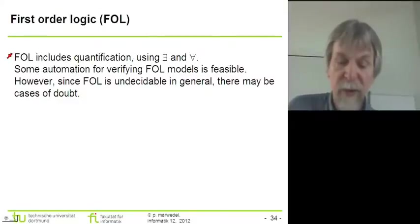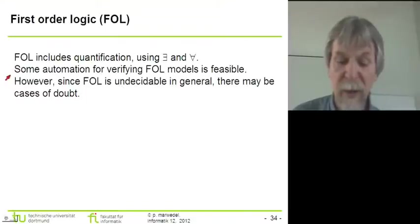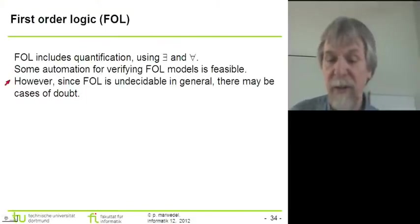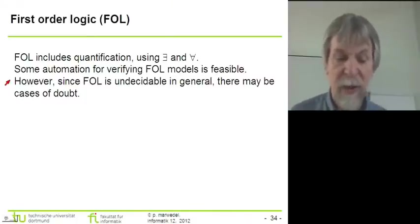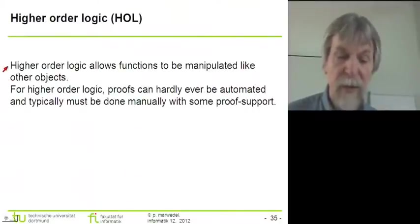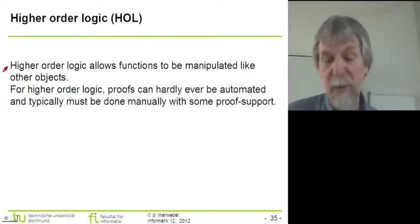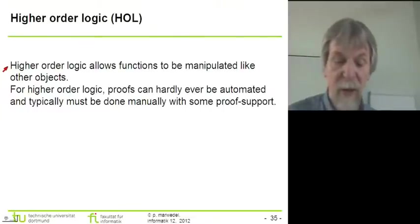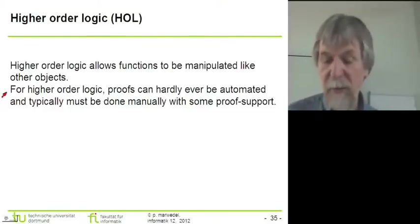We can try to use other types of logic for verification of systems. We can use first order logic, where existential quantifiers are available. For these, some automation is feasible; however, first order logic is undecidable in general, so there may be cases where we cannot show whether two representations are equivalent or not. We can even go to higher order logic, where we can represent and manipulate functions like other objects, but in higher order logic proofs can hardly ever be automated and usually must be done manually.